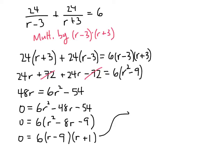So that means that our solutions are r equals 9 and r equals negative 1. But remember that this was the speed of a boat, so a negative answer doesn't make sense here. And so the answer that we're looking for is r equals 9, and the units would be miles per hour.